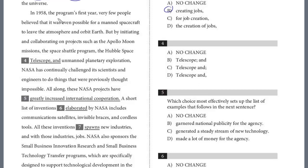In 1958, the program's first year, very few people believed that it was even possible for a manned spacecraft to leave the atmosphere and orbit Earth. But by initiating and collaborating on projects such as the Apollo moon missions, the space shuttle program, the Hubble Space Telescope, and unmanned planetary exploration, NASA has continually challenged its scientists and engineers to do things that were previously thought impossible.